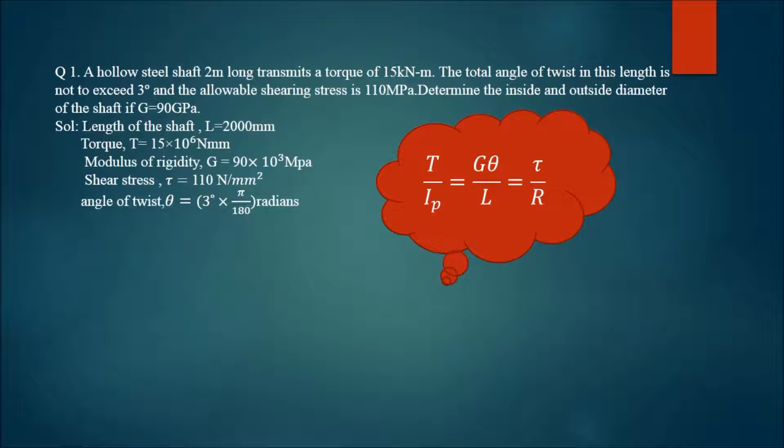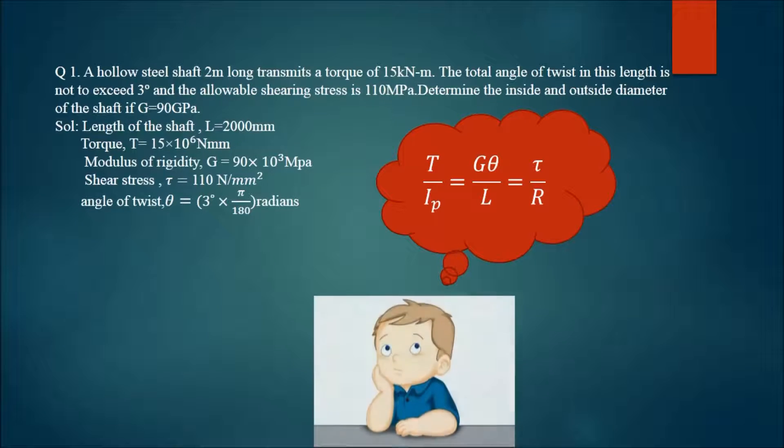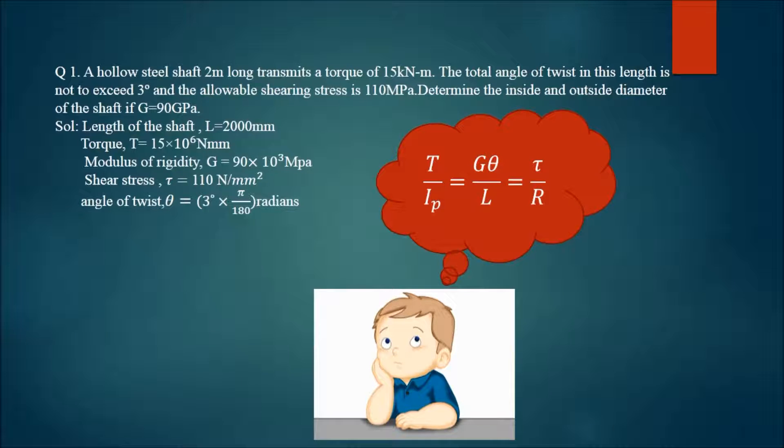Now here you can see the formula that will come to mind is T/Ip = Gθ/L = τ/R. If you have been attending lectures, you might know this formula. This is a famous formula called the torsional formula. T is torsion or torque, and Ip is the polar moment of inertia.